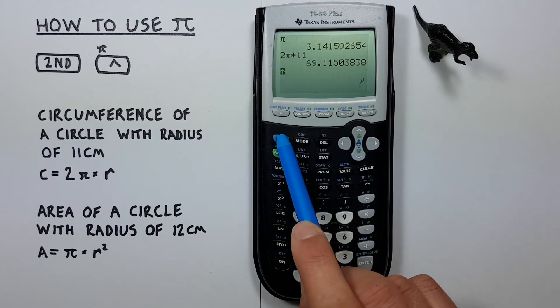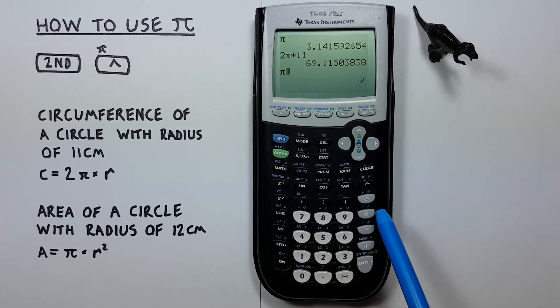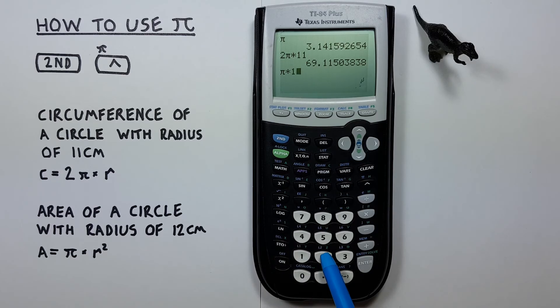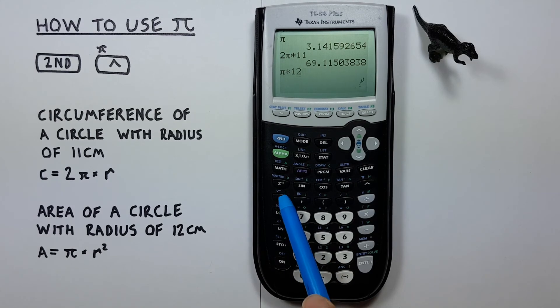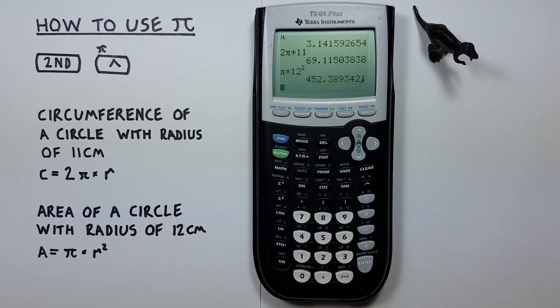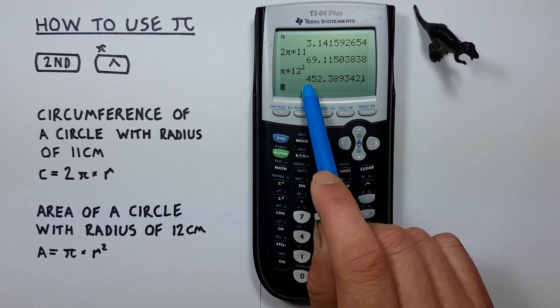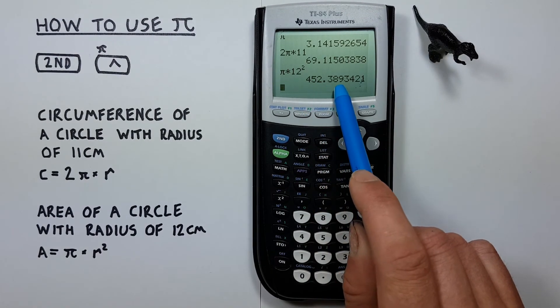Again we start by entering the PI with the second function exponent times our radius which was 12. Then squared. And we see we get an area of 452.389.